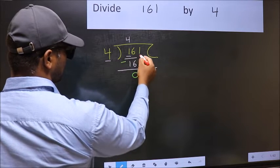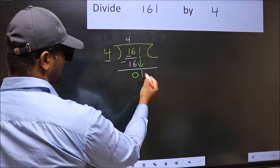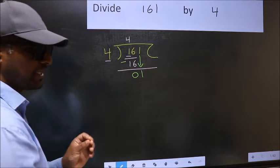After this, bring down the beside number. So 1 down. After this step, the mistake happens.